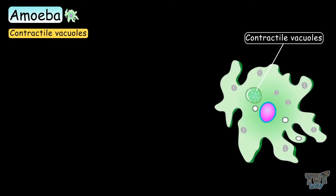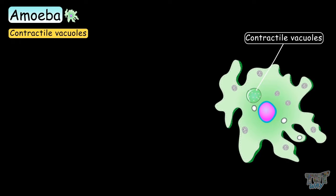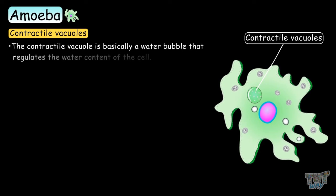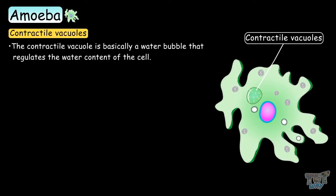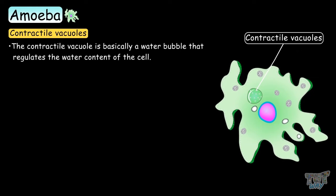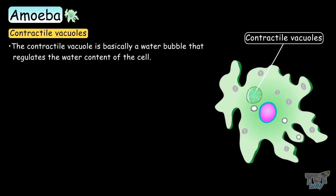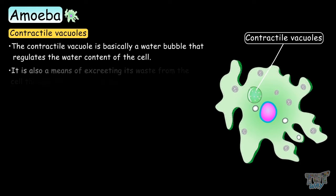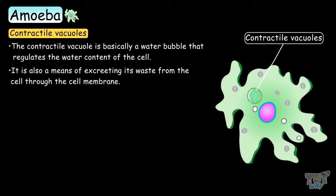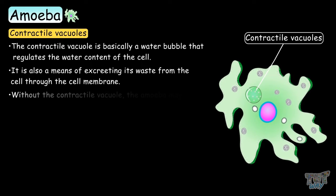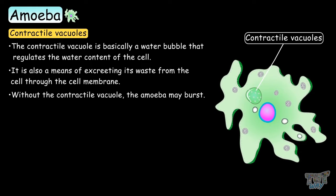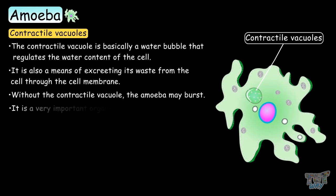Contractile vacuoles are a type of vacuole that act as a water bubble, regulating the water content in the cell. They are also a means of excreting waste from the cell through the cell membrane. Without the contractile vacuole, the amoeba may burst — undoubtedly, it is a very important organelle.